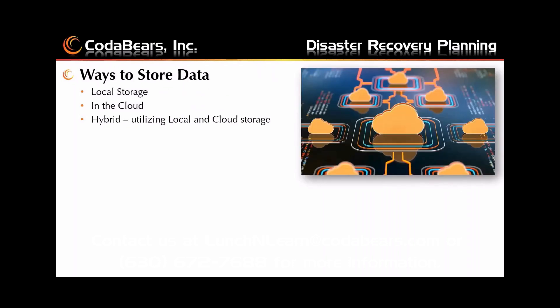Here are a few ways to store your data. Your typical plans will be local storage, in the cloud, or a hybrid utilizing both. With local storage, your critical data is stored on company-owned hardware, generally on-premise — it can also be off-site in another physical location. Although this is considered the most secure option, it runs into similar risks as local redundant storage with regards to safety concerns, and additional systems and staff are required to manage these.